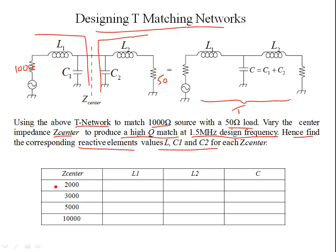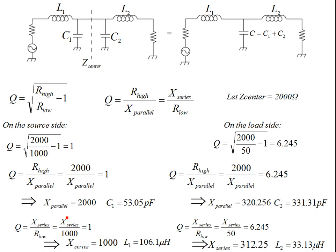We have four options for Zcenter: 2000, 3000, 5000, and 10000 ohms — all greater than both 1000 and 50 ohms. We want to see how varying Zcenter controls Q and the frequency response. Recall that in the Q method for designing a two-element L matching network, Q is determined on both the source side and load side based on the source and load impedances.